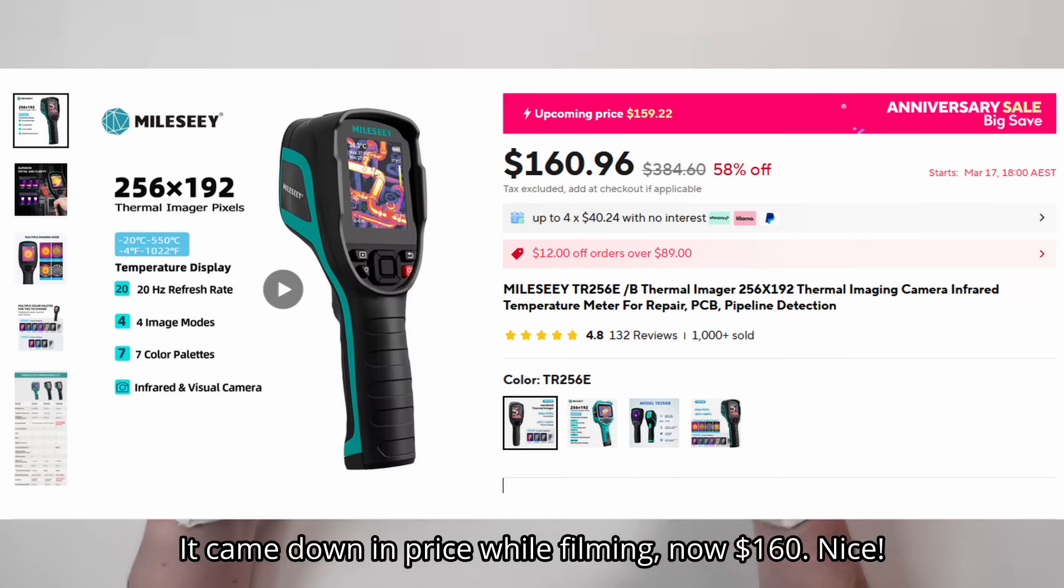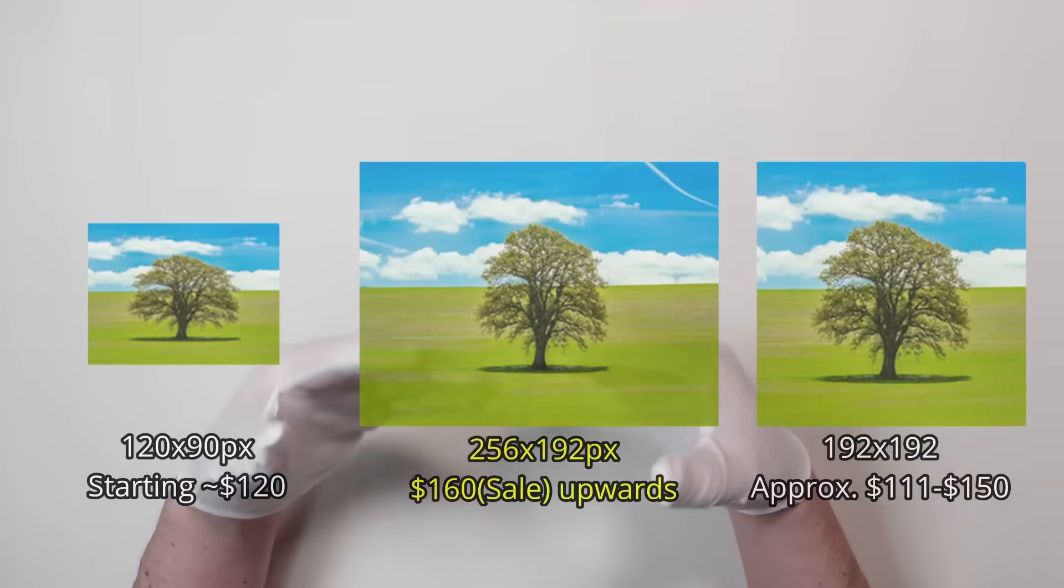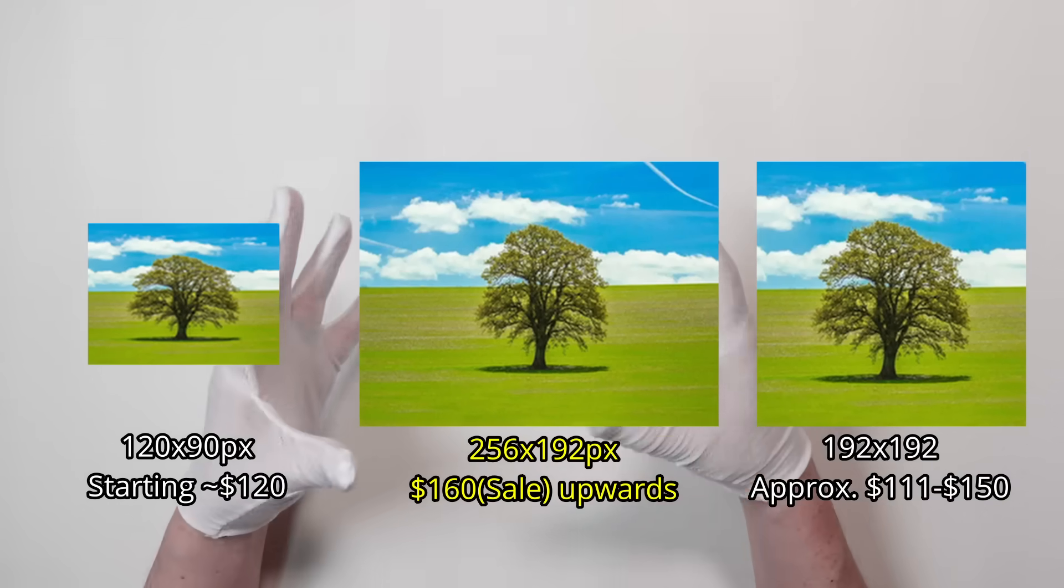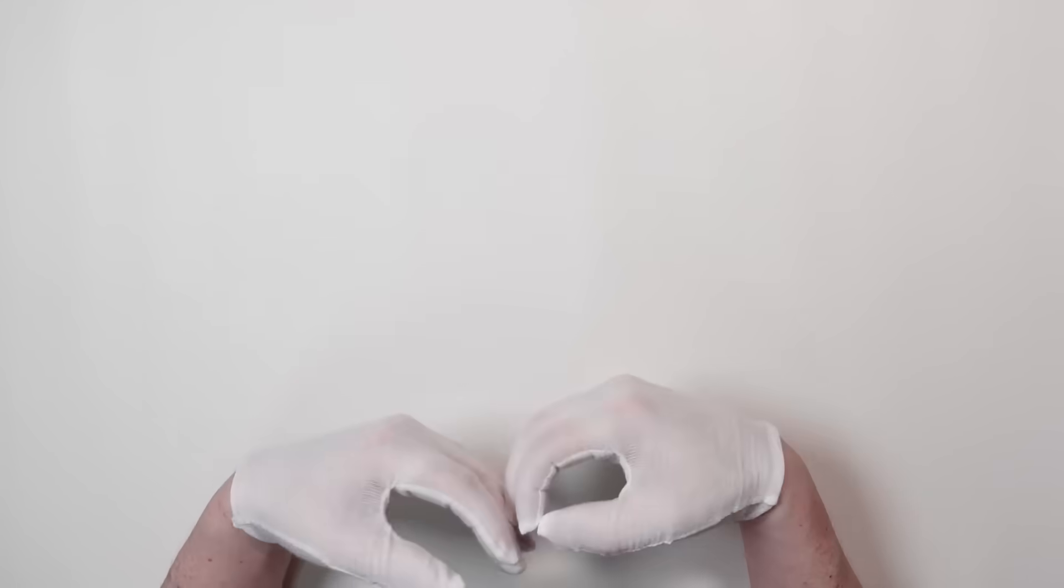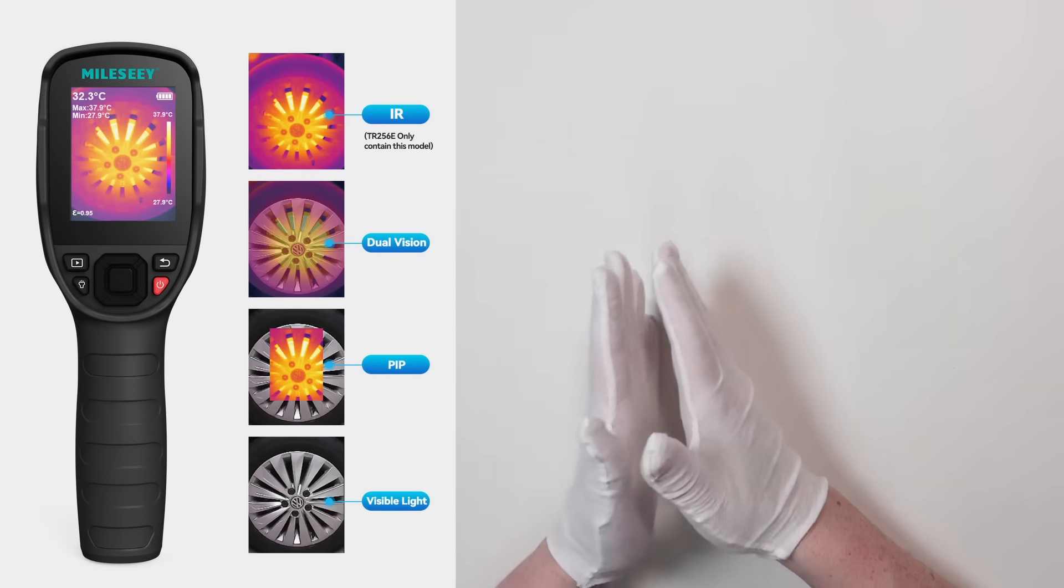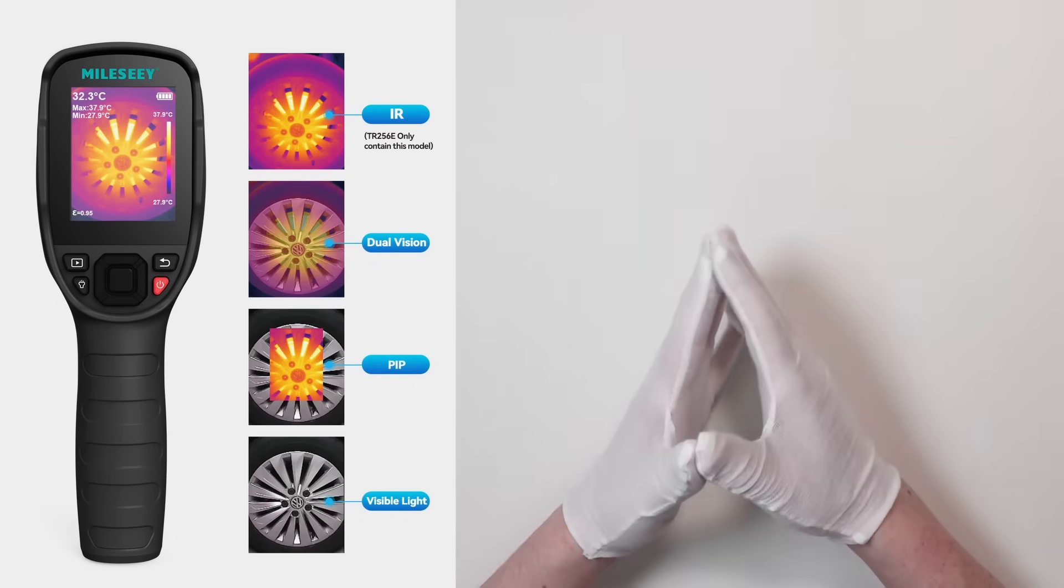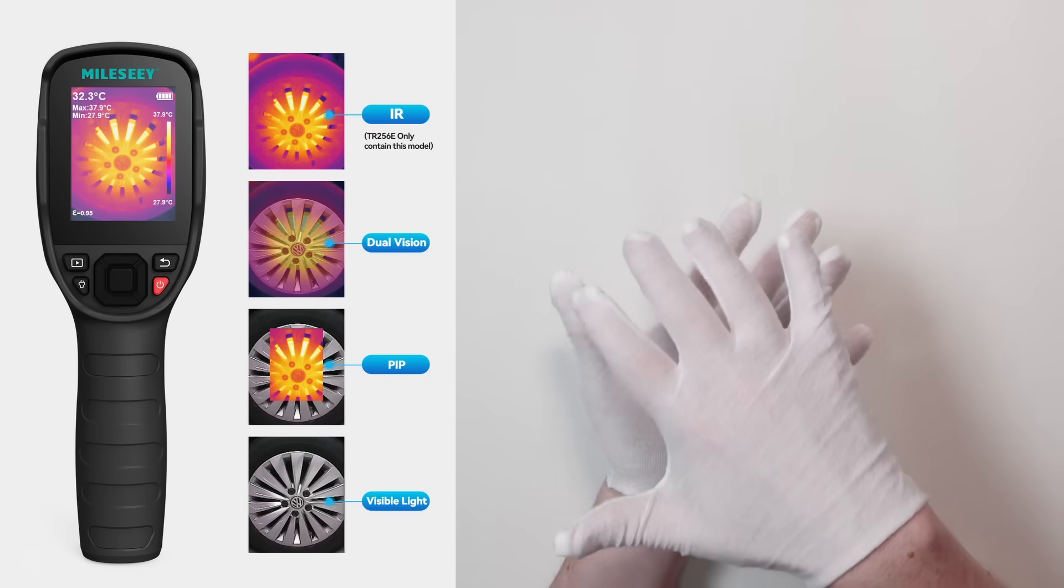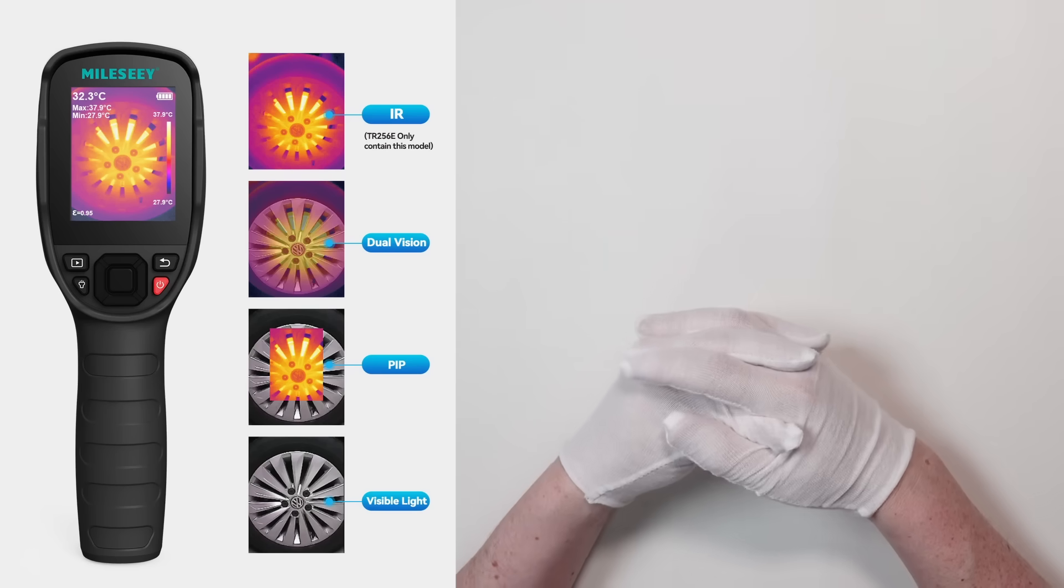Now, for a little more money, about $180 to $200, you can get ones with 256x192 pixels. And the ones in this price range often have other features too, like a larger LCD screen to view the images, the ability to save photos and videos to onboard storage, pass-through mode or visible light mode, so you can see the thermal image on top of a regular camera image, so you can really pinpoint the problem areas.